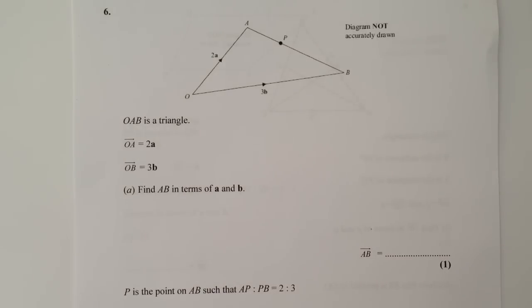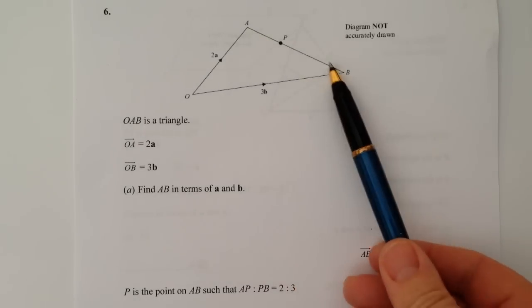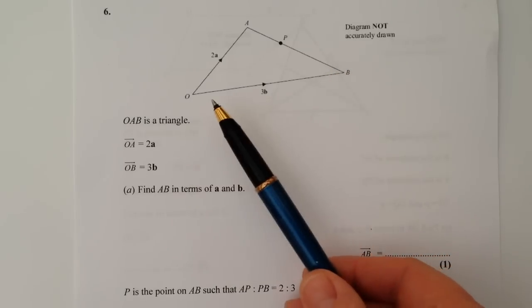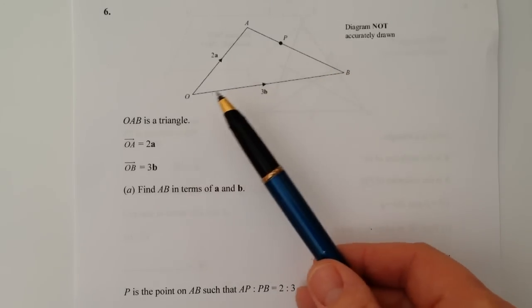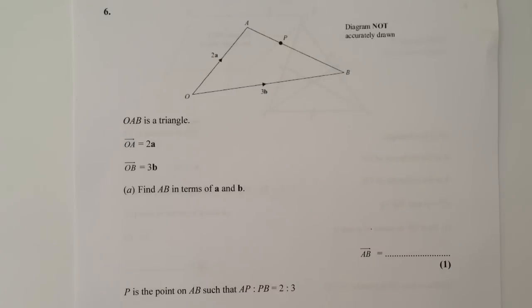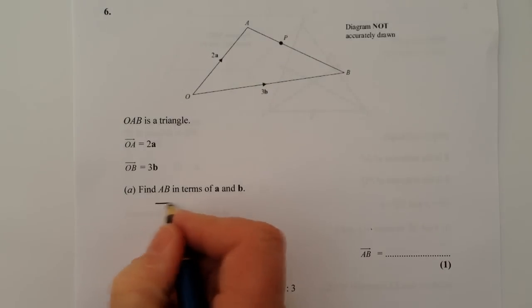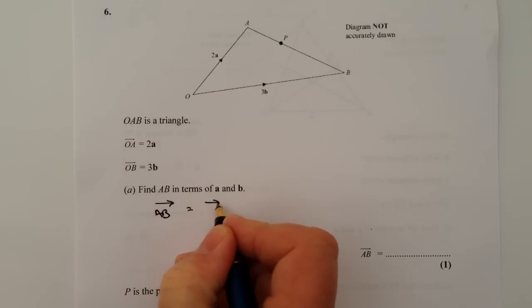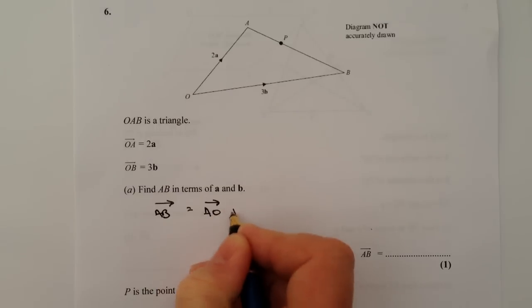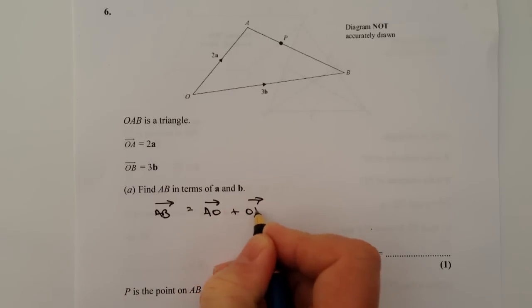OK, so we've got this first question as part a: find vector AB in terms of a and b. Well, we don't know anything about a and b at this moment, but we do know this vector along here and this vector along here. So we're going to have to go around the houses. What we're saying is that vector AB is equal to vector AO plus vector OB.